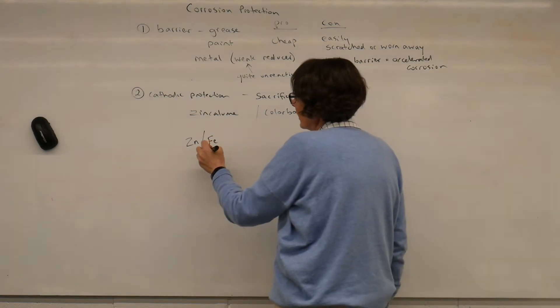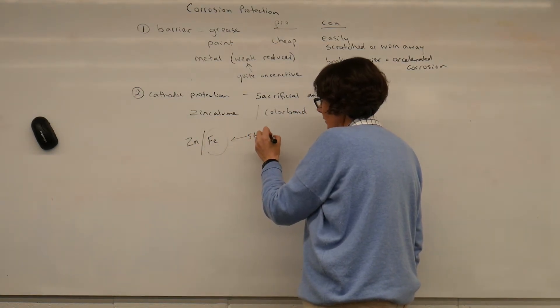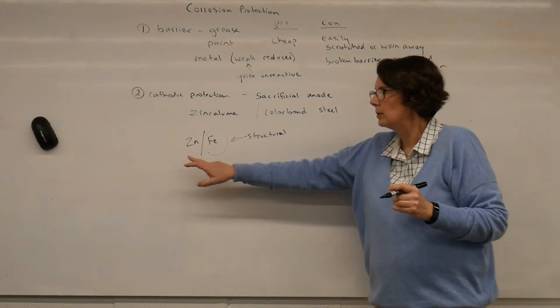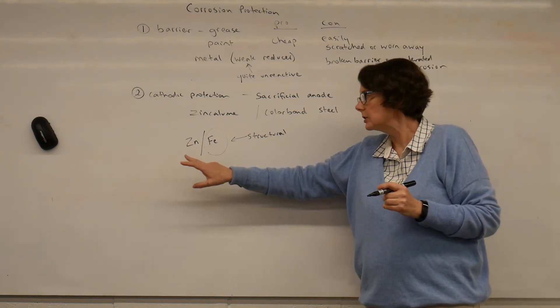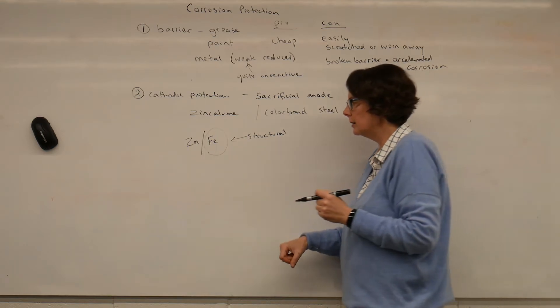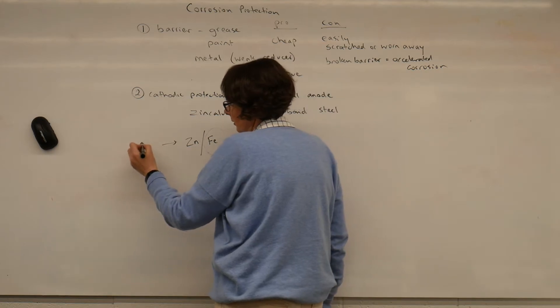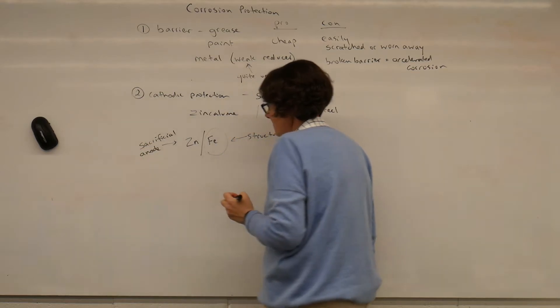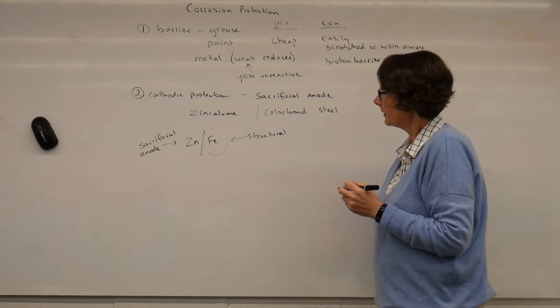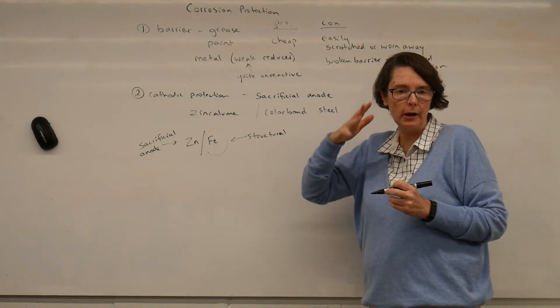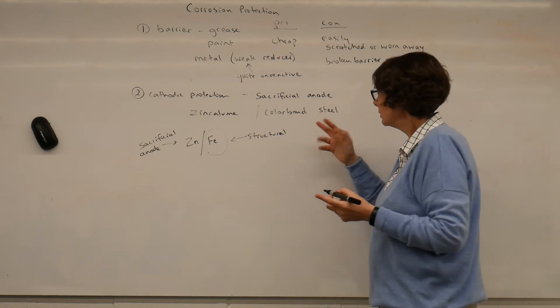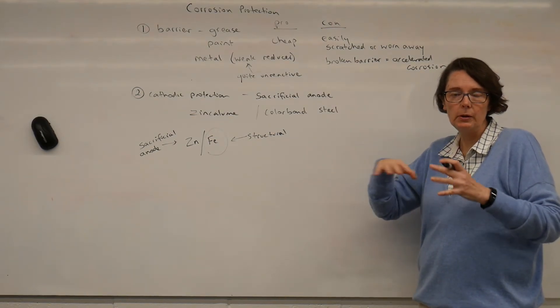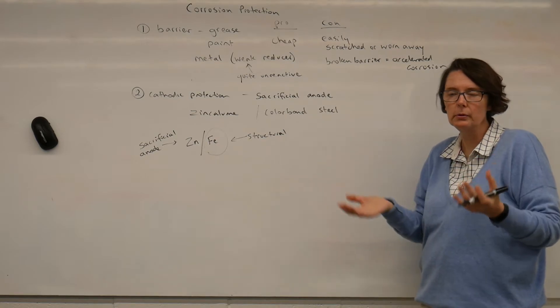And so, the iron part here, this is the structural part. Okay, we want our iron roof or wall or whatever. But then we put a zinc coating on it and it's the zinc then that will oxidise in preference to the iron. And this is the sacrificial anode. And this is why we do it. This is why we apply this coating of zinc to our steel, and the color-bond roofs just have an extra layer over the top of that of paint. So, there's a bit of protection for the zinc as well so the roof will last even longer.